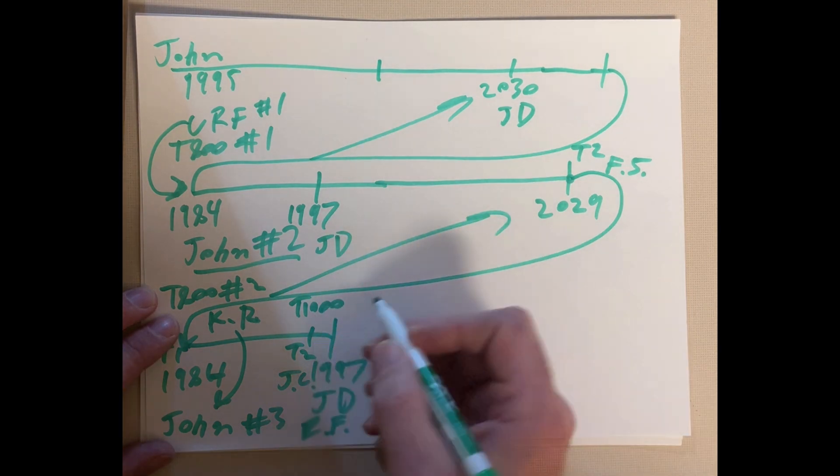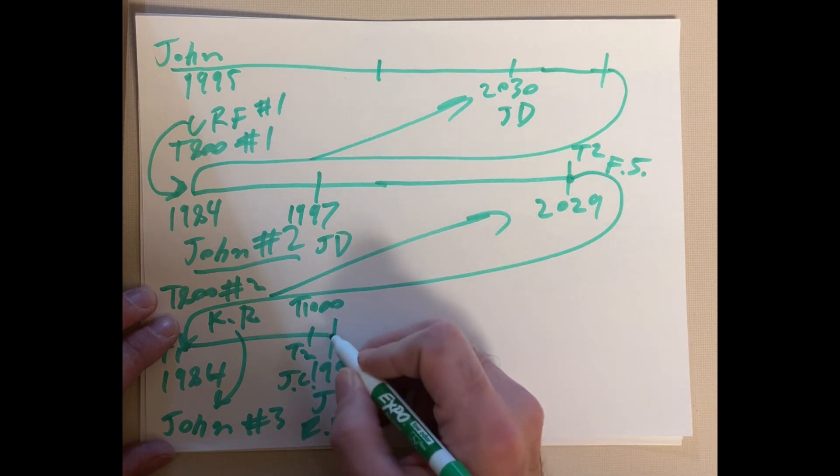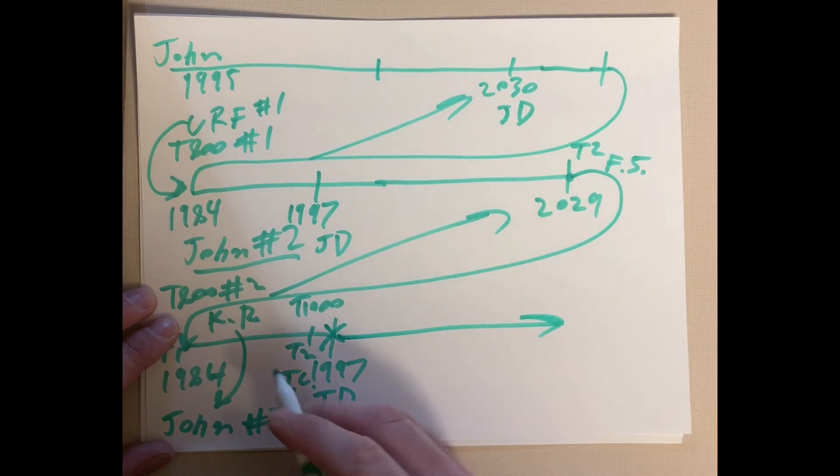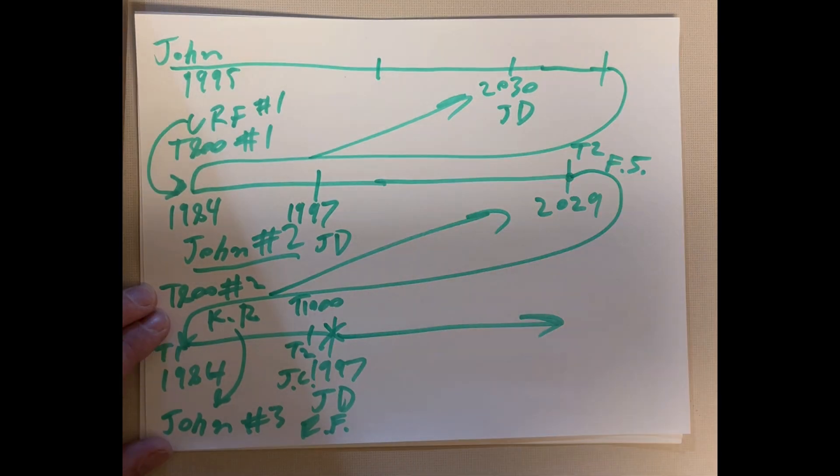So, now this T-1000 fails and Judgment Day fails. So, now we get the new timeline that doesn't have a Judgment Day in it. Anyway, that's my theory. What do you think?